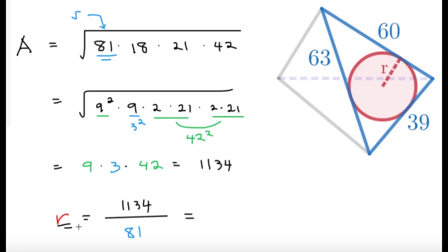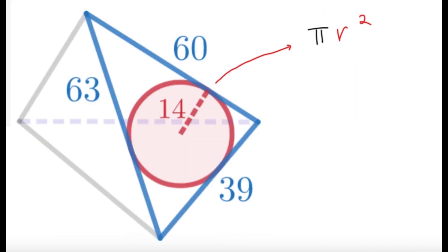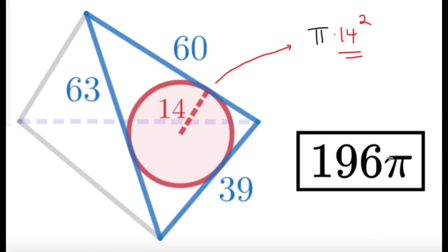To get the inradius, it's simply area over semiperimeter: 1134 divided by 81, which equals 14. So the radius of the circle is 14. Last step — just get the area: pi r squared equals pi times 14 squared. Since 14 squared is 196, the area of the incircle is 196π. That's our final answer. Hopefully you learned something new from this video, and I'll see you in the next one. Bye-bye.